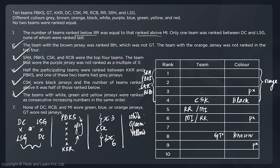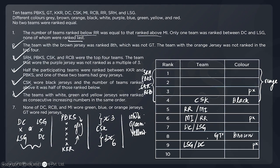From statement two, DC and LSG have exactly one team between them and neither is ranked last. DC and LSG can't take ranks one through six since those are occupied. Looking at ranks seven through ten, neither can be tenth, so the possibilities are DC and LSG occupying ranks seven and nine in some order, with one team between them at rank eight.